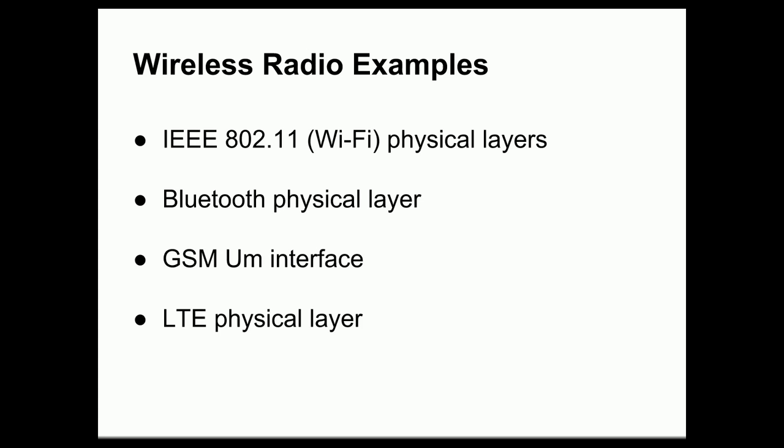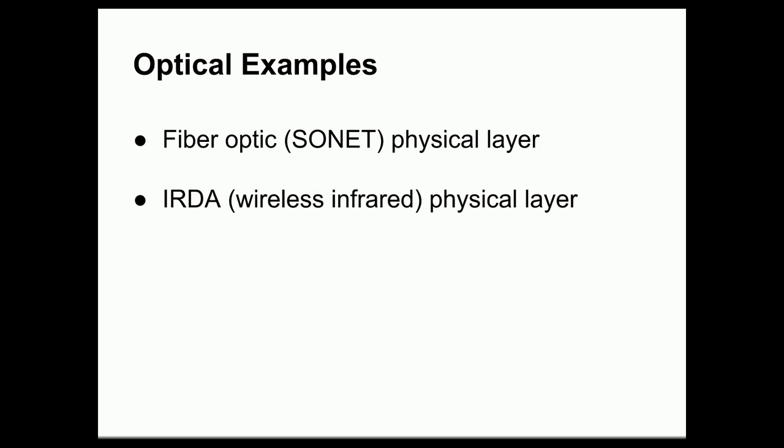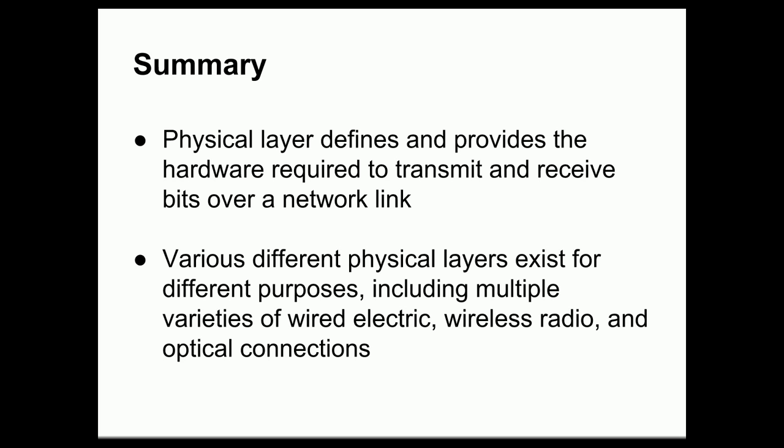In wireless devices, we have other physical layer standards. Wi-Fi, or 802.11, has several different physical layer specifications depending on the standard revision. Bluetooth specifies its own physical layer, as does the GSM Um interface for 3G cell phones. For 4G LTE cell phones, there is another LTE physical layer with its own specifications. Fiber optic systems such as SONET rings also have their specifications, and even infrared-based wireless devices, or IrDA, have a physical layer specification.